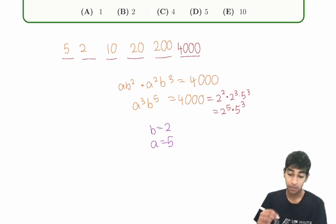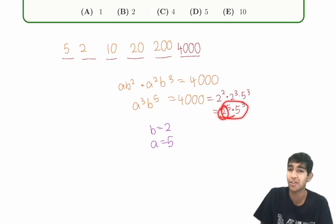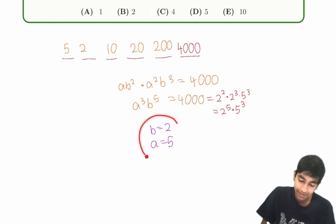But are there any other possibilities? Let's just verify just to make sure. Well, notice that B has to be a fifth power. The only fifth power that divides 4,000 is 2, or, well, 1, of course, also. So we already explored that the two case works. Now, if B equals 1, we would have that A cubed times 1 times 1 to the 5 is 2 to the 5 times 5 to the 3.